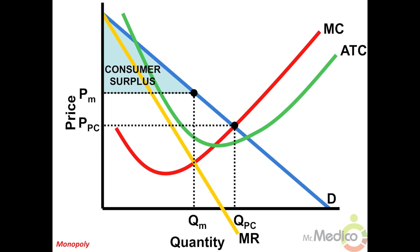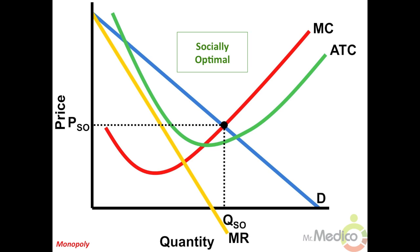In the next graph you can compare the monopoly price and output to the perfectly competitive price and output. The perfectly competitive consumer surplus is the area under the demand curve and above the perfectly competitive price. The consumer surplus under monopoly is the shaded triangle.